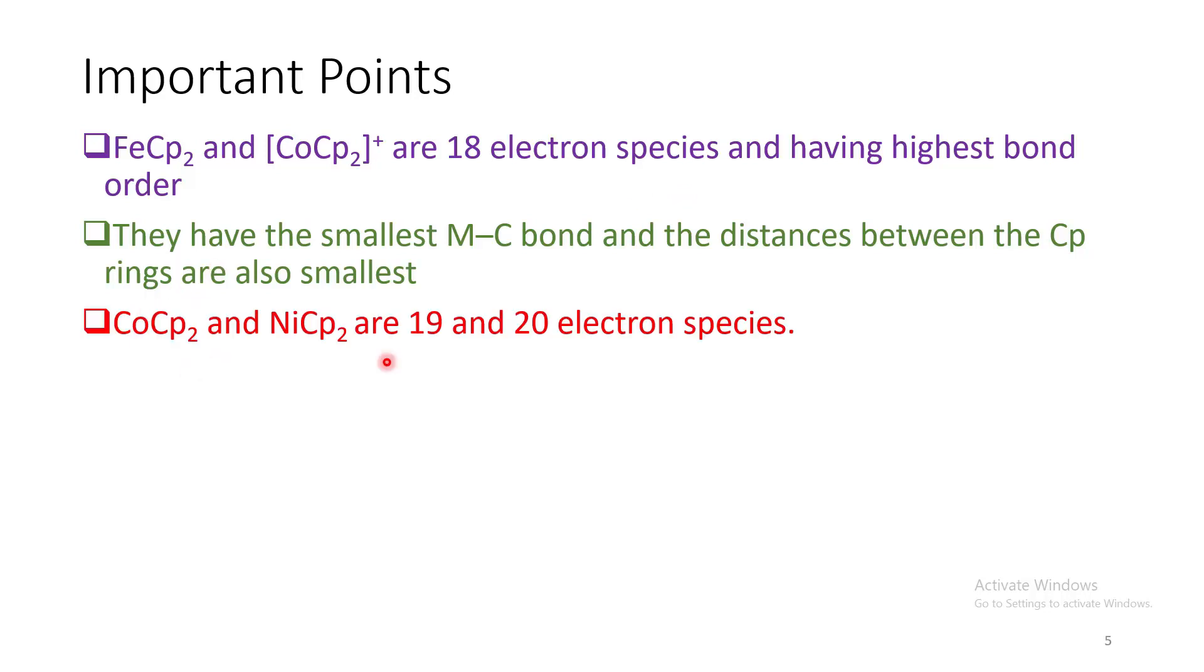If we come to this cobaltocene and nickelocene, they are 19 and 20 electron species. This extra electron goes to the anti-bonding orbital which reduces the metal-carbon bond order. So the metal-carbon bond becomes longer.